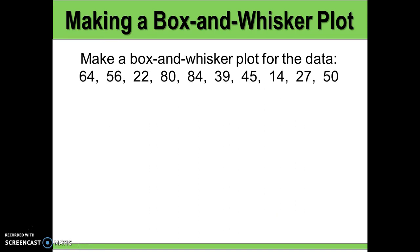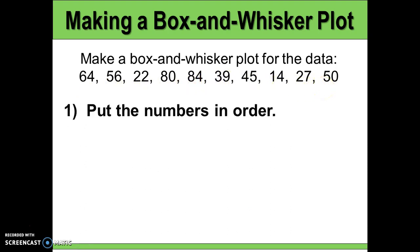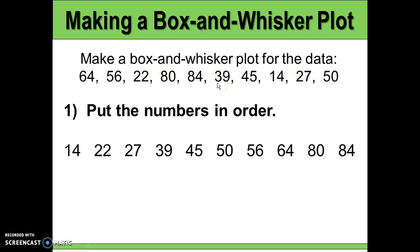We're going to walk through making a box-and-whisker plot, then look at a few examples and interpret what the data is showing. Here I have a data set with about 10 different numbers. The first thing to do is put those numbers in order from least to greatest — the smallest number is 14, then 22, 27, and so on.